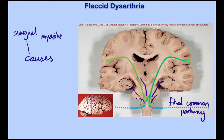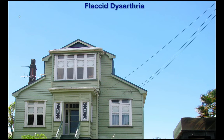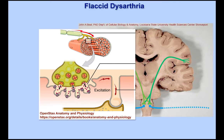Myasthenia gravis affects the neuromuscular junction — the actual connection between the nerve and the muscle itself. You might think of this as a problem right at the end where it connects to the house. Things go wrong with the chemical signaling at the junction, and this builds up over time so that their speech might be okay to begin with, but after a certain amount of talking it declines.